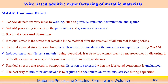Common defects associated with wire arc additive manufacturing include porosity, cracking, delamination, and spatter — all variants of welding defects. These processing issues impact part quality and geometrical accuracy of the component, since shrinkage and distortion are always associated with the geometrical accuracy of components produced by WAAM.